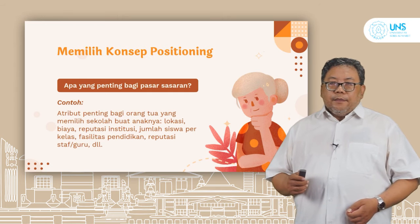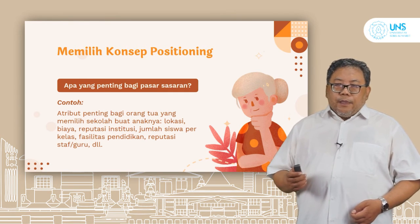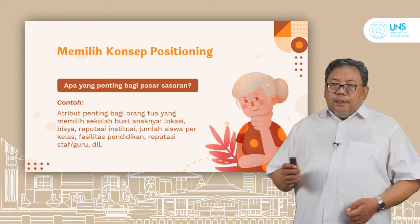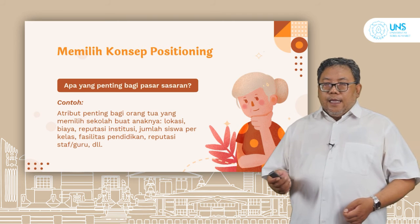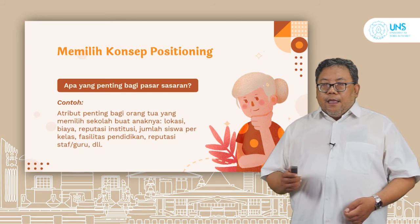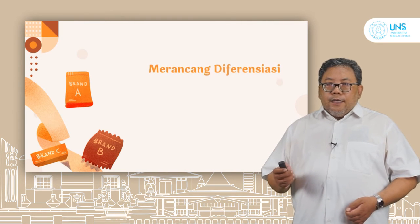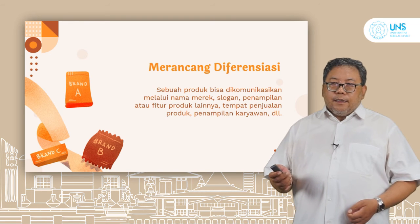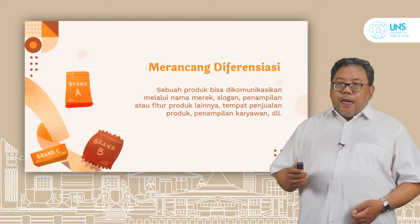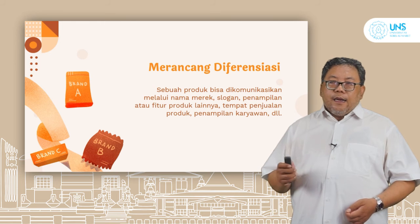Memilih konsep positioning: apa yang penting bagi pasar sasaran? Contoh, atribut penting bagi orang tua yang memilih sekolah buat anaknya. Orang akan melihat dari sisi lokasi, biaya, reputasi institusi, jumlah siswa per kelas, fasilitas pendidikan, reputasi staff atau guru, dan lain sebagainya. Merancang diferensiasi — sebuah produk bisa dikomunikasikan melalui nama, merek, slogan, penampilan, atau fitur produk lainnya. Tempat penjualan produk, penampilan karyawan, dan lain-lain.